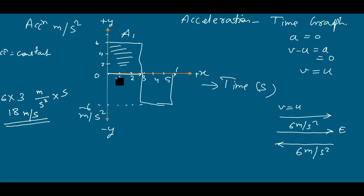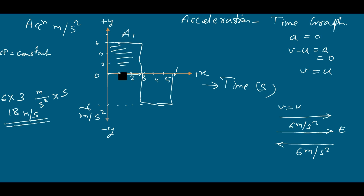So we can say that with the help of the acceleration-time graph we can find out the velocity-time graph by calculating the area at each time instant. For example, the area under the curve up to 1 second can be found, then for 2 seconds it can be calculated, and in this way we can derive the velocity-time graph.